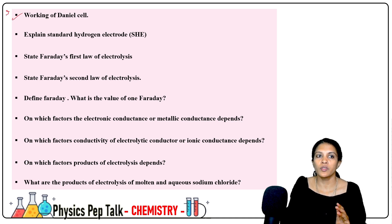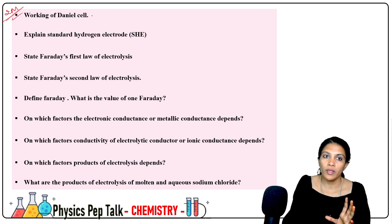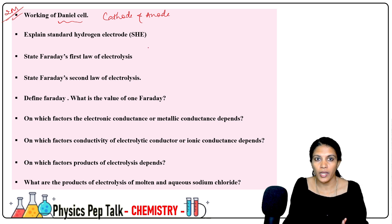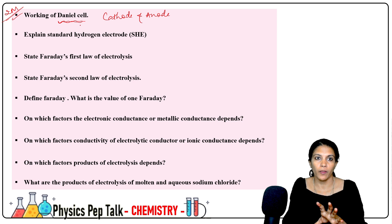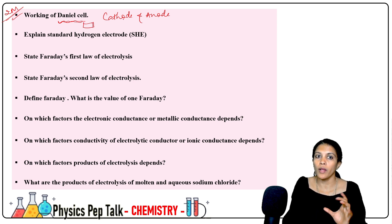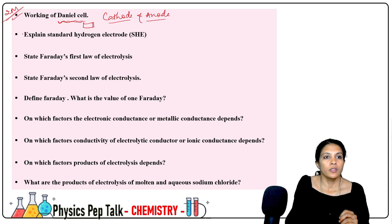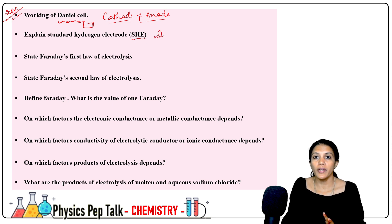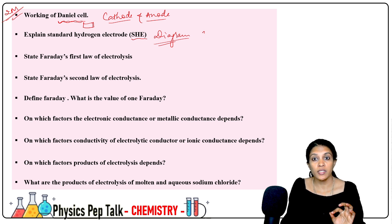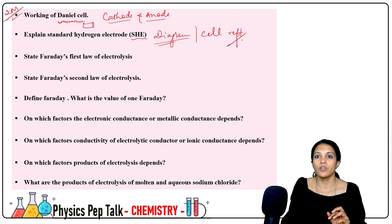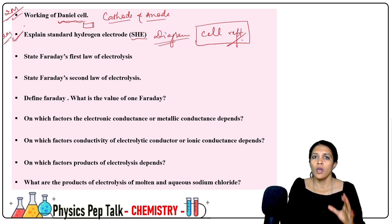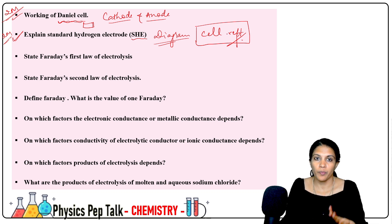Working of the Daniell cell — you need to write the working of the Daniell cell, the anode reaction of the Daniell cell, the complete diagram. Next, explain the standard hydrogen electrode (SHE) — this can be explained with the reaction. Cell representation is also very important. If you have 2 marks, you need to write the correct cell representation.